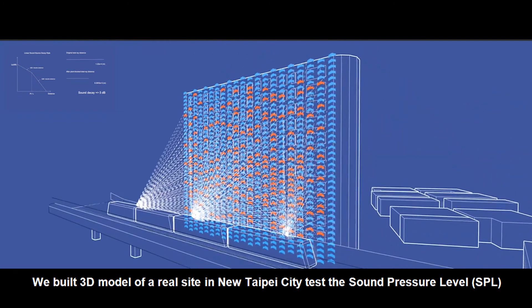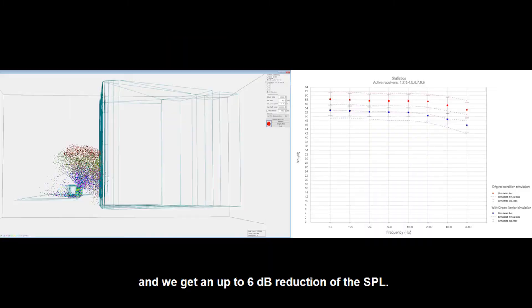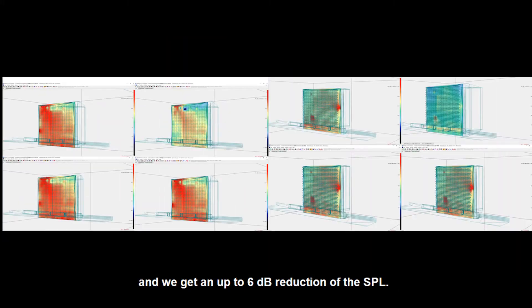We built a 3D model of a real site in New Taipei City to test the sound pressure level before and after the installation of our design, and we get an up to 6dB reduction of the SPL.